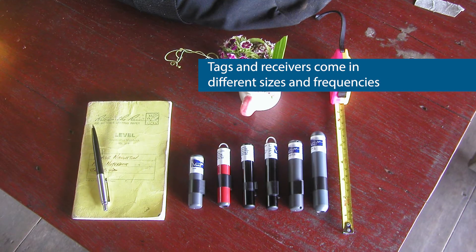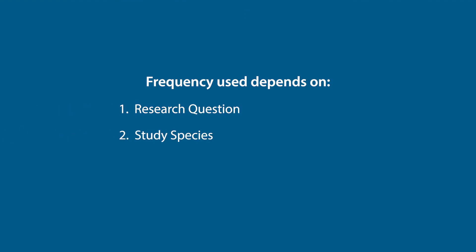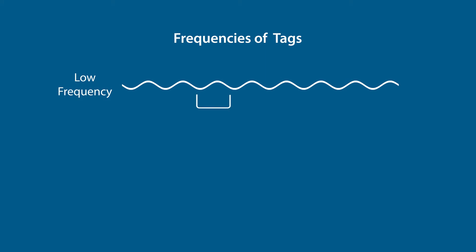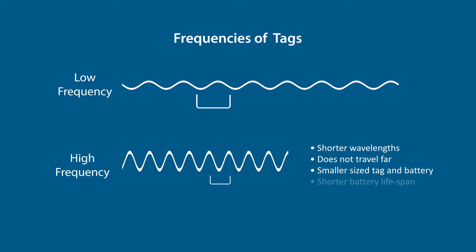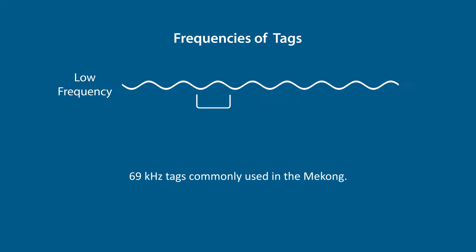There are many different frequencies of tags and receivers, similar to how there are different frequencies for AM or FM radio stations. The type of frequency you choose depends on your research questions, your study species, and your focal area. For example, if you're studying long-distance migrations over a long timescale, you might choose a lower frequency, whereas if you're looking at smaller species and fine-scale movements, you might choose a higher frequency. In the Mekong Basin, researchers have commonly used the 69 kilohertz frequency.